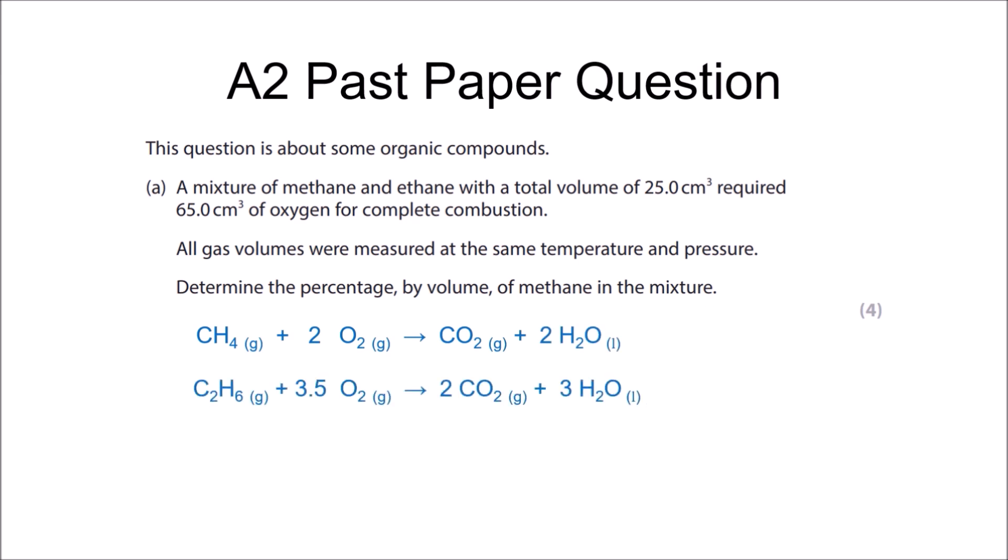Now I don't know how many cubic centimetres of methane there are, so I'm going to call them x. Therefore, I'm going to need 2x cubic centimetres of oxygen. Same for ethane, which I will label y, which means I need 3.5y cubic centimetres of oxygen. I know the volumes of methane and ethane add up to 25, and the volumes of oxygen add up to 65. By solving this system of equations, I get x equals 15 cubic centimetres. In other words, the volume of methane in the mixture. Divide this by the total volume of the mixture, and multiply by 100 to get 60% as the final answer.